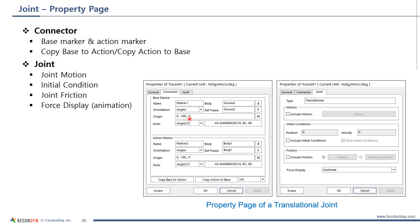In many cases, base and action markers have the same origin and orientation. So, copy base to action and copy action to base are used to copy the origin and orientation of one marker to the other.